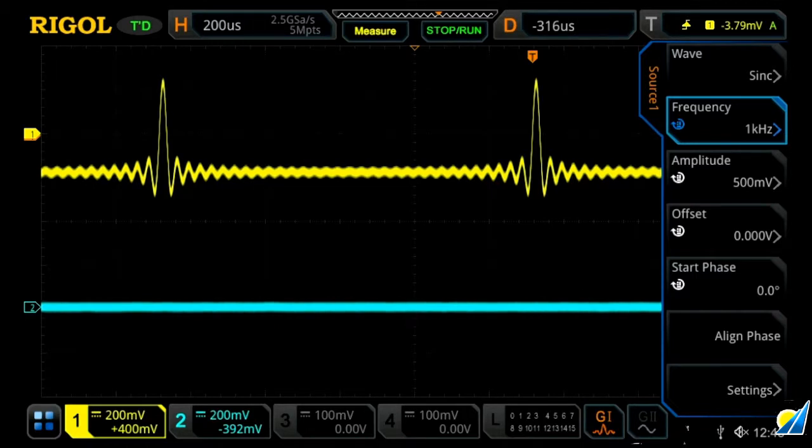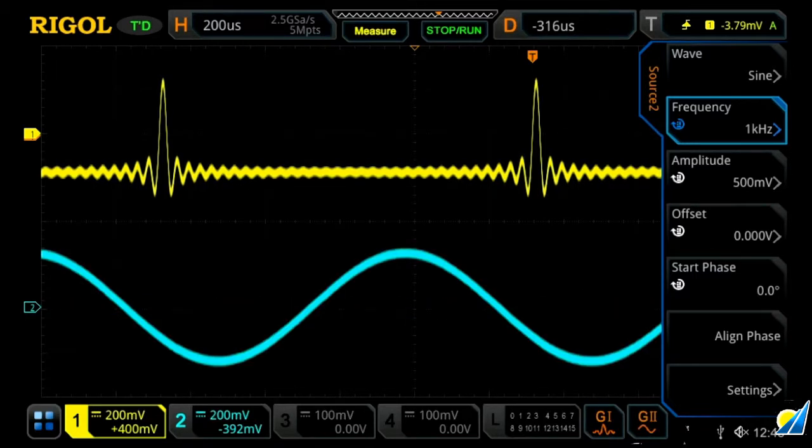Let's go back to source one. Now to show some of the other capabilities of the instrument, let's turn on our second generator which will now show a sine wave on channel two in blue.